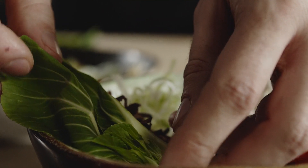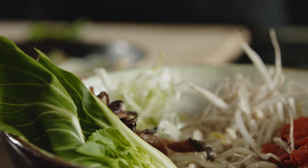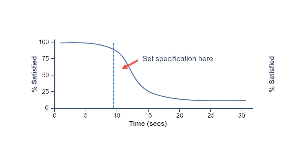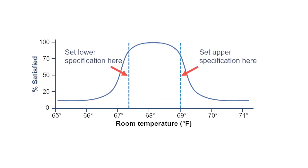The last thing I want to mention is the different ways you can set your specifications for the CTQs. You can either have a one-sided specification — for example, the waiting time or process time of a performance requirement needs to be less than X minutes — or you can have a two-sided specification — for example, the room temperature needs to be within a specific range between X and Y.